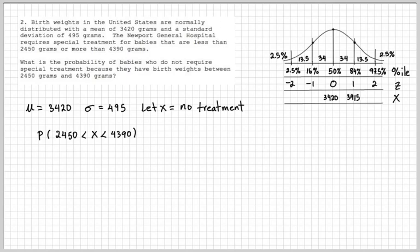So I'm going to add 495 to 3420. I get 3915. I'm going to add another 495, and I get 4410. And then I'm going to subtract 495 from 3420, gives you 2925. And then subtract another 495 from 2925 to get 2430.